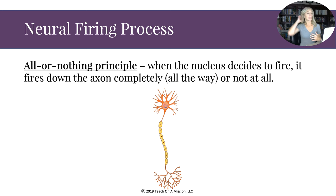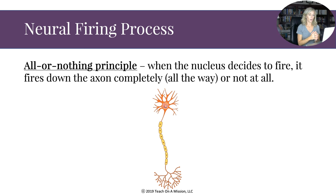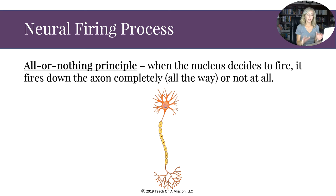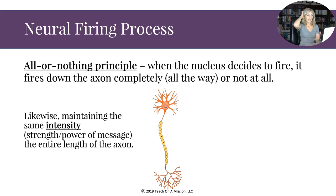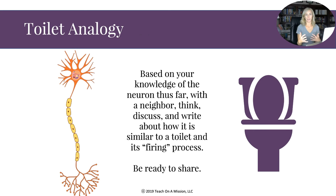A key concept here is the all-or-nothing principle. When the nucleus decides to fire, it fires down the axon completely — or not at all. It also does so at consistent strength, maintaining the same intensity and power of the message the entire length of the axon.